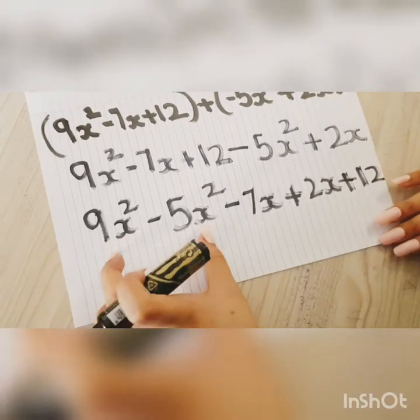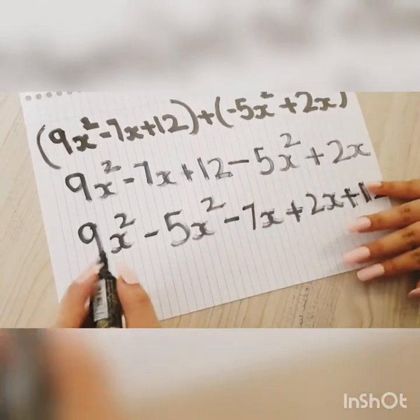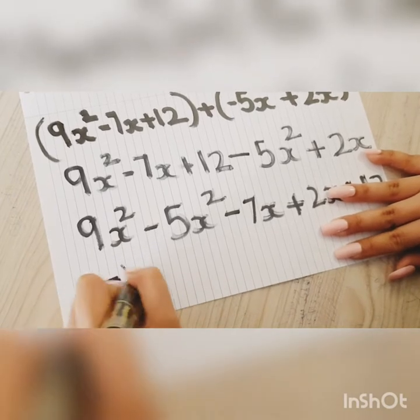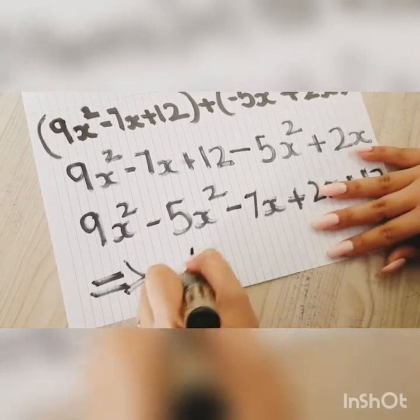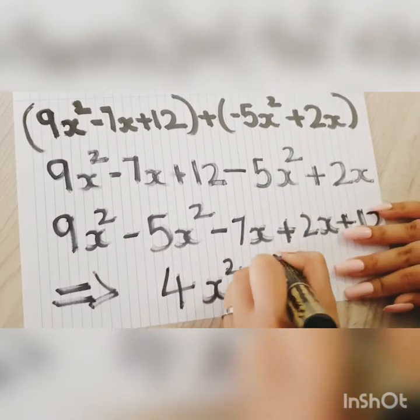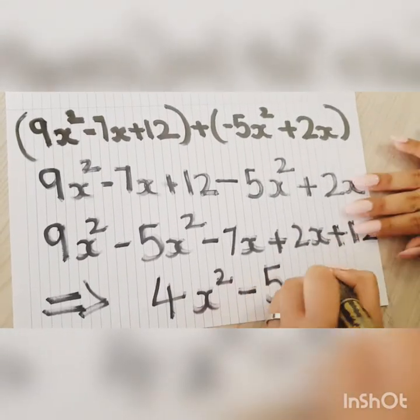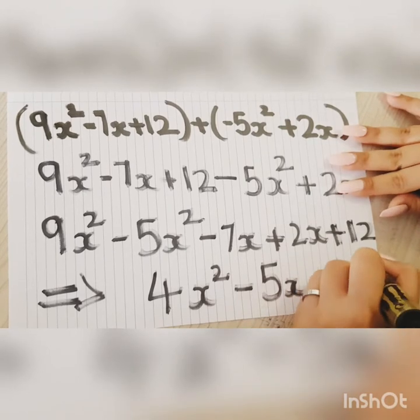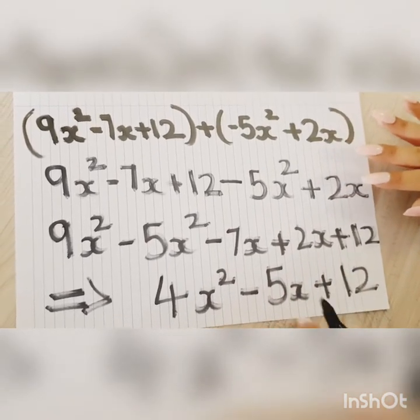Now when you add them we have the final answer. It's going to be equal to 4x² - 5x + 12. This is how you get your final answer.